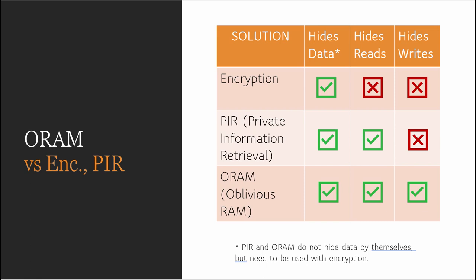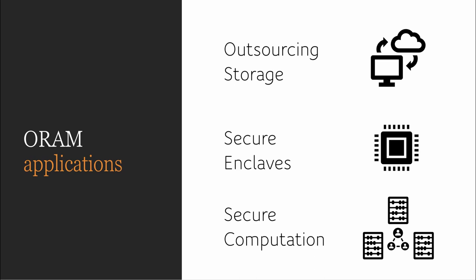PIR and ORAM by themselves do not protect the contents of the data. They need to be combined with a secure encryption scheme in order to do so. The most common application of Oblivious RAM is the one just described, in which a client outsources memory to an untrusted service provider. However, this is not the only application. The first Oblivious RAM protocol had in mind a different application: that of a secure execution environment that needed to depend on an untrusted RAM.